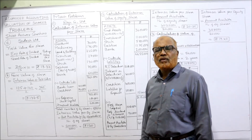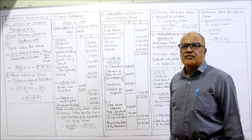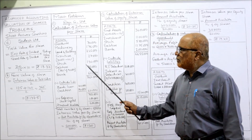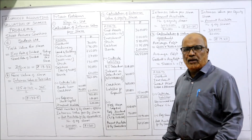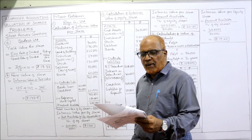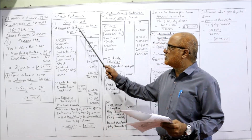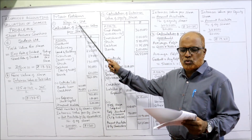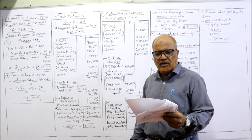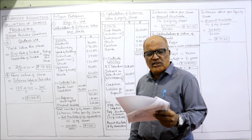That's all — we have completed 7 short problems. Now I am coming to the main problems. First main problem: the following is the balance sheet of Raju Company Limited as on 31st December. A particular balance sheet is given.